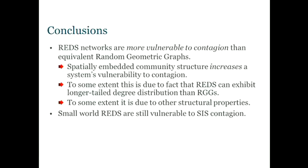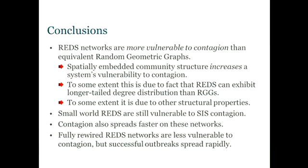When we rewire REDS, we can get to a small world regime without really compromising their vulnerability to infection. You have to go beyond the small world regime before you start to see that uptick in the curve. So you can build small world REDS networks that have the nice mixing properties of a small world. Things can spread fast when they take root, but they're also vulnerable to those infections taking off. When you fully rewire one of these networks, they become less vulnerable to contagion. It's harder for contagion to get started, but if it does, it will spread very quickly because of all those random edges percolating all over the network.